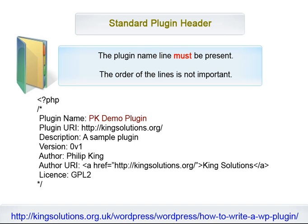The header also includes the version number, the author, the author's URI, and the license — usually GPL2. The minimum information WordPress needs in order to recognize your plugin is the plugin name line. The rest of the information will be used to create the table of plugins in the plugin management screen. The order of the lines is not important.